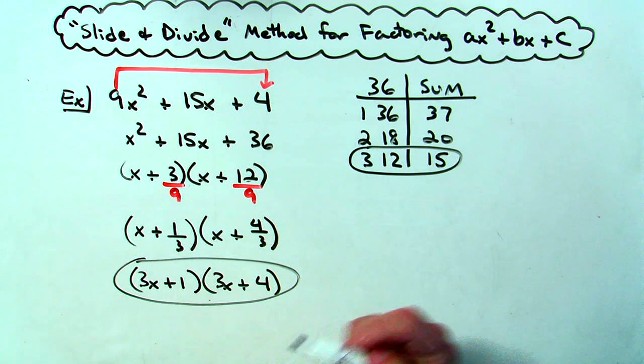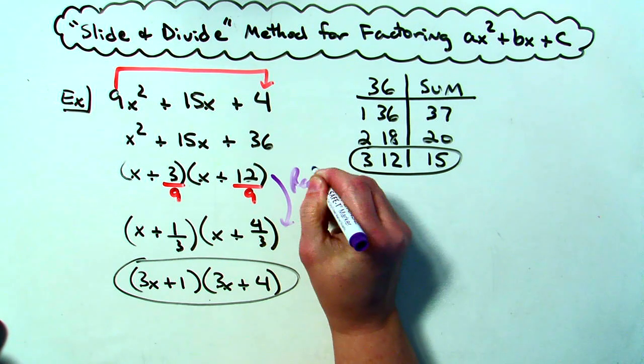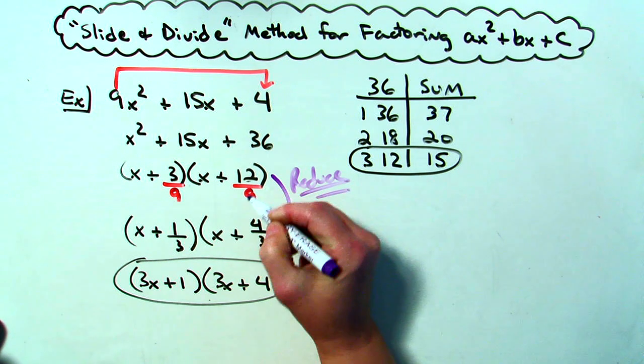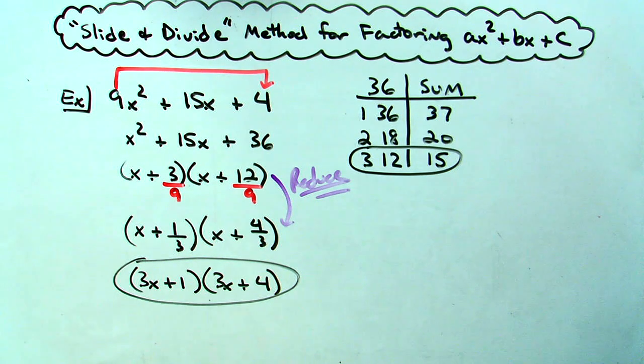But the reason I wanted to go ahead and do this third example is because right here, you do need to reduce if whatever is being divided doesn't divide out evenly, but it does reduce. So you want to reduce those fractions to be able to get down to your final factored form.